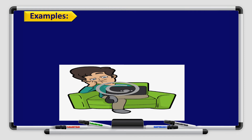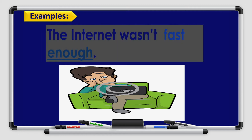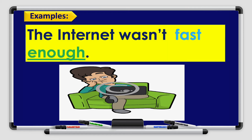Let's see this example. Take a close look at this picture and try to think of using the word 'enough' with the verb in negative form. The internet wasn't fast enough — it was too slow. The internet wasn't fast enough. Great job!